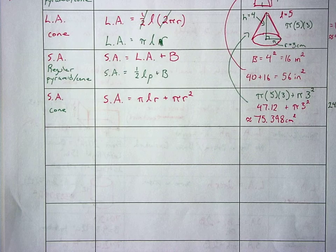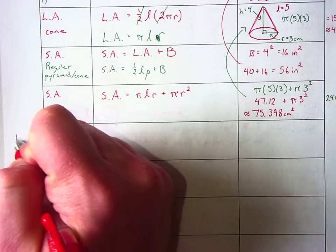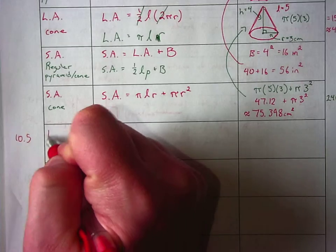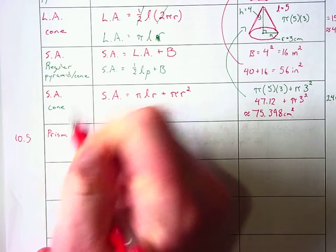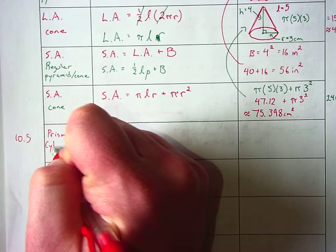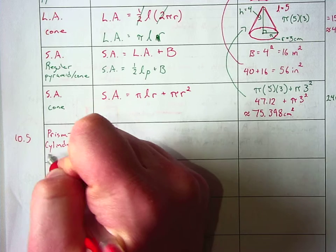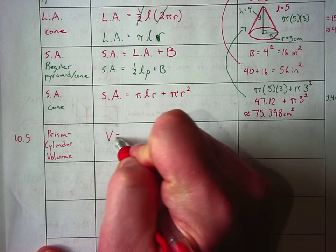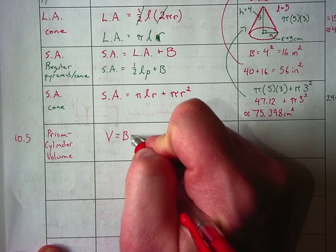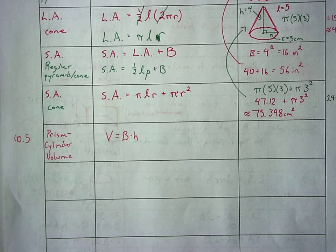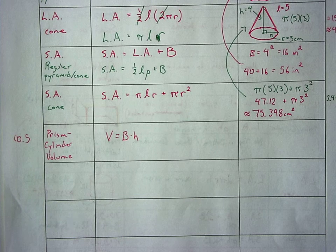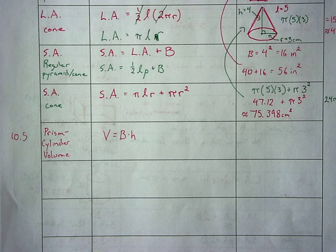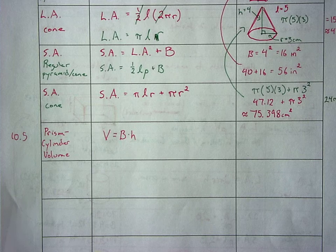We're actually going to do the vocab in an opposite order. So instead of doing the volume postulate first, we're going to do the prism cylinder volume formula, which is just volume is equal to the area of the base times the height of the prism. That's it. So don't make it any harder than that.